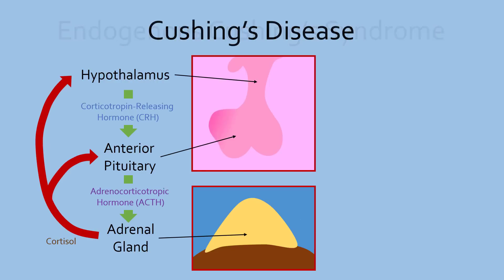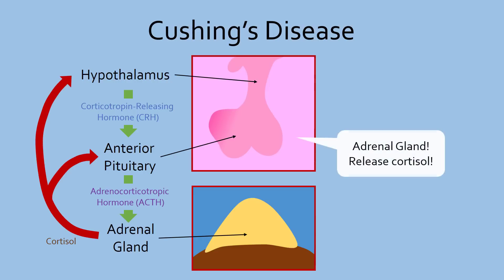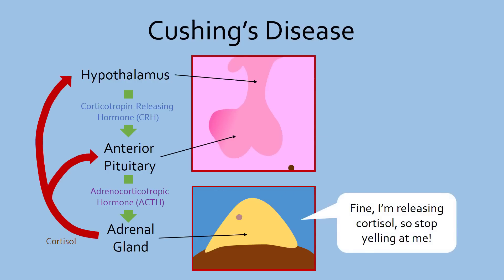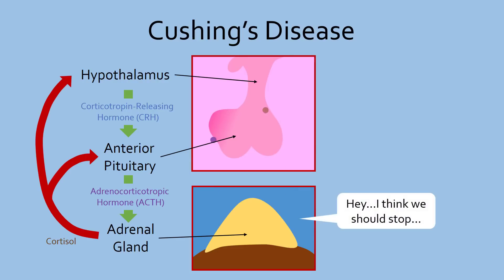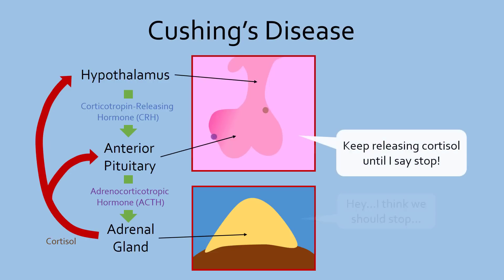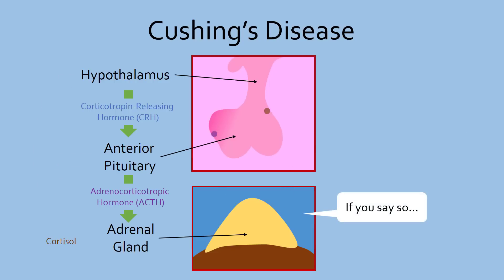If there is a tumor in the anterior pituitary, more cells are producing ACTH, which stimulates more cortisol release. These anterior pituitary tumors are unresponsive to cortisol and continue to produce ACTH despite cortisol being released, eliminating the feedback mechanism. When endogenous Cushing's syndrome is due to an anterior pituitary tumor, it is known as Cushing's disease.